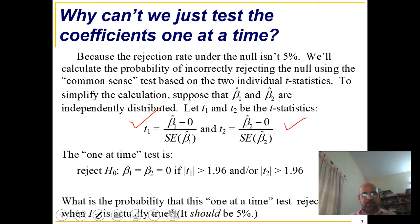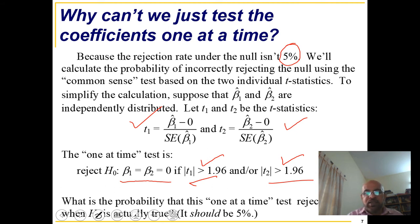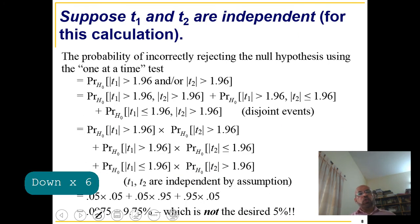H-naught beta_1 = beta_2 = 0 will be rejected if t1 or t2 exceeds the critical value. When you apply the t-test individually with a 5% level of significance, your actual level of significance has become 9.75%. That is the reason we apply the F-test instead.